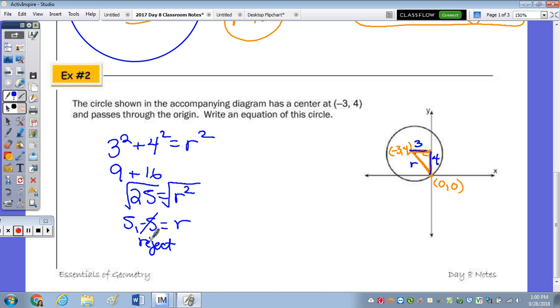Now we have a radius of 5. So now the equation. We need to take a look at the center and the radius, and since the center has an x value of negative 3, it's going to be x plus 3 squared, plus y minus 4 squared, equals r squared, which would be 5 squared, or 25.